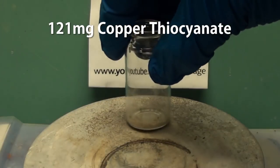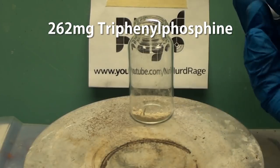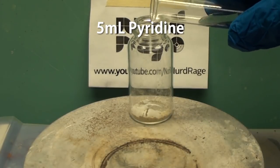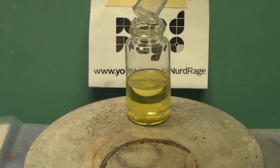First get 121mg of copper thiocyanate and 262mg of triphenylphosphine. Then add to it 5-10mL of pyridine. I'm using 10mL of pyridine for clarity but you can use 5.